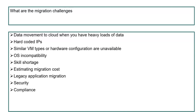There are plenty of migration challenges. Data movement to cloud is difficult if you have huge amounts of on-premises data such as terabytes or petabytes. Hard-coded IPs are another challenge. Similar VM types or hardware configurations may be unavailable in the cloud. Incompatibility can occur if you're using legacy OS systems not available in the selected cloud. Other challenges include skill shortage, estimating migration cost, legacy application migration, and security and compliance concerns.